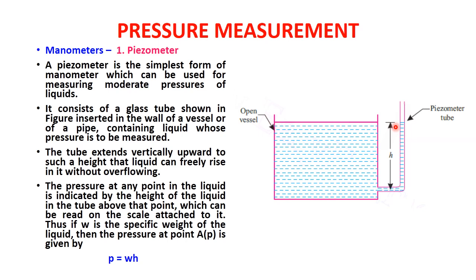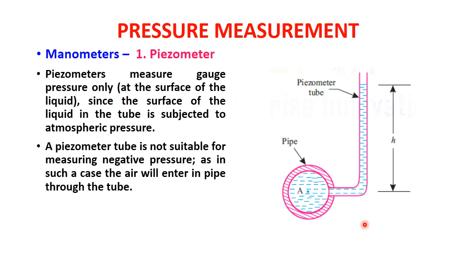One important consideration is that the piezometer tube should be attached to the vessel in such a way that the fluid does not overflow. That is the key requirement for measuring pressure with a piezometric tube. Here you can see point A with the height measured — this was shown for a vessel, but it can also be used for a pipe.